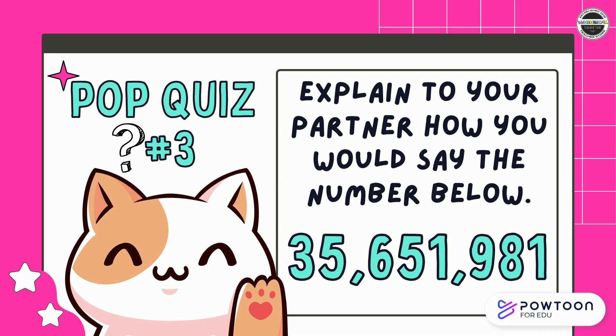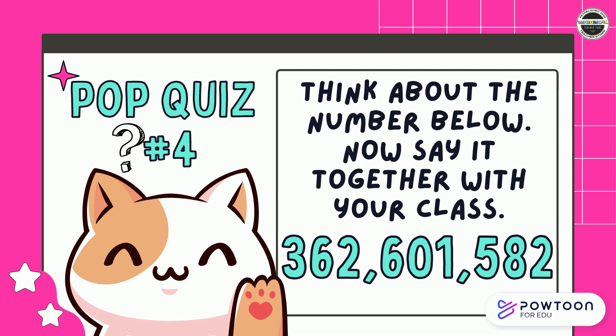Question number three — explain to your partner how you would say the number below. Remember to look at each section of the number. Pop quiz question number four — think about the number below, now say it together with your class. Did you all say 362,601,582? Great work.